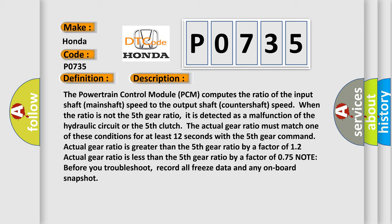The powertrain control module PCM computes the ratio of the input shaft mainshaft speed to the output shaft countershaft speed. When the ratio is not the fifth gear ratio, it is detected as a malfunction of the hydraulic circuit or the fifth clutch. The actual gear ratio must match one of these conditions for at least 12 seconds with the fifth gear command: actual gear ratio is greater than the fifth gear ratio by a factor of 1.2, or actual gear ratio is less than the fifth gear ratio by a factor of 0.75.